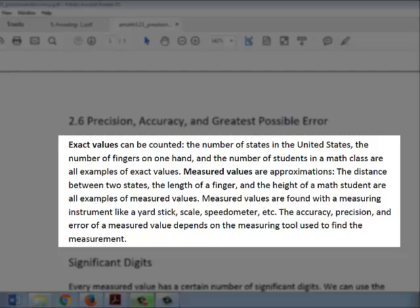Measured values or measurements are approximations. For example, the length of your finger would be an approximation and therefore a measured value. The distance between two states would also be a measured value.